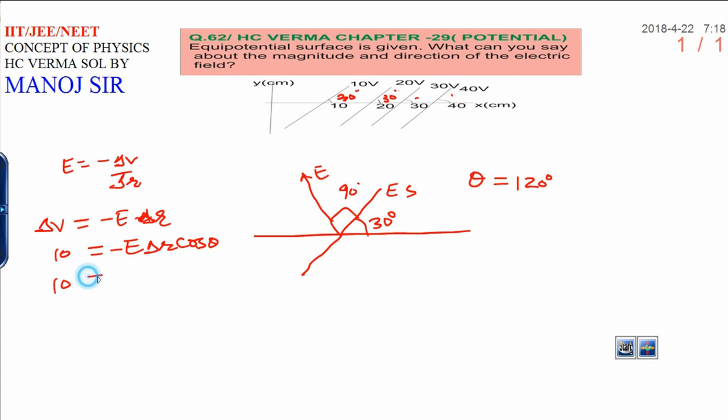And you see here, 10 volts. 10 is equal to minus, we want to calculate the electric field here. And delta R cos 120, delta R is also given, that is 10 centimeters, 0.1 meters